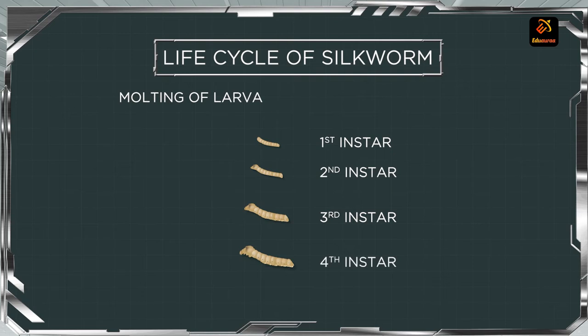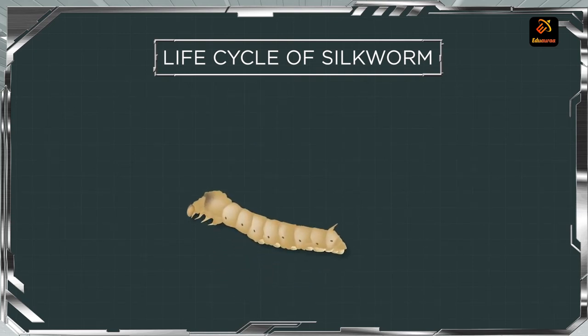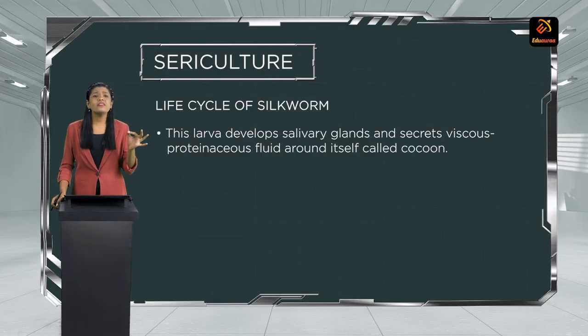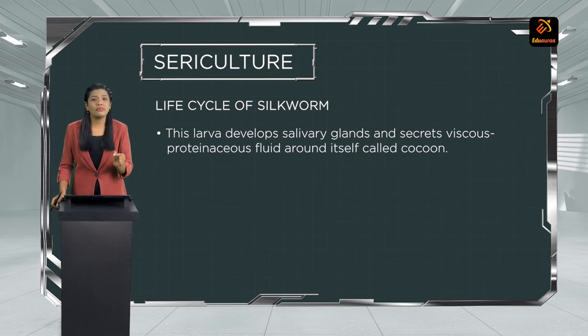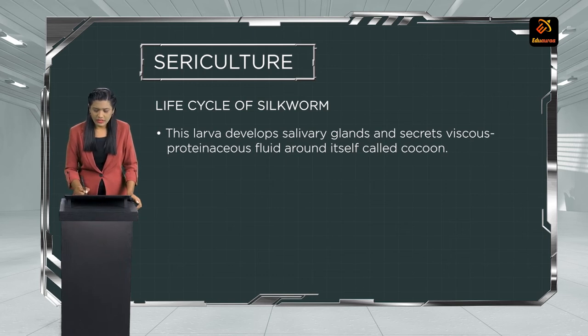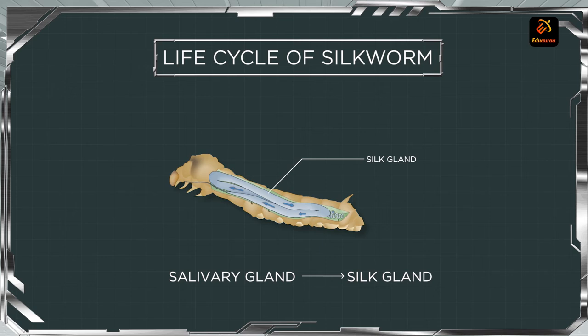After four molts, it gets converted into the fifth instar. Now this larvae is going to develop specialized salivary glands. The speciality is that the salivation of these salivary glands leads to the formation of the cocoon. Once the larvae develops, there are modifications in the salivary glands, and these salivary glands are now called as the silk glands.